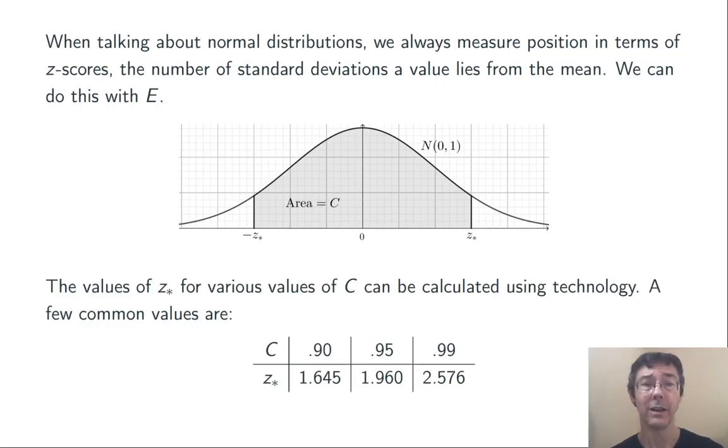We can do this using technology. However, because there's only a few really standard values of C, it's sufficient to have a table here. For example, when C is 0.95, the z-star here is going to be 1.960.